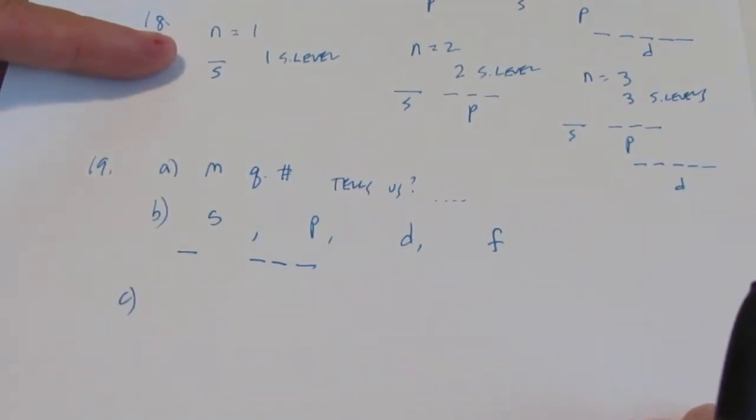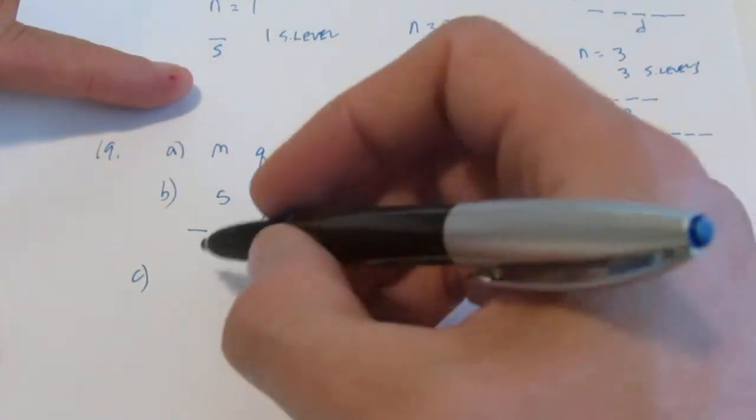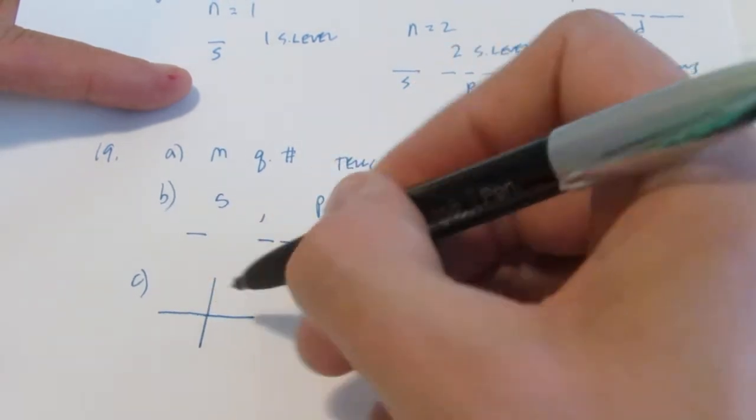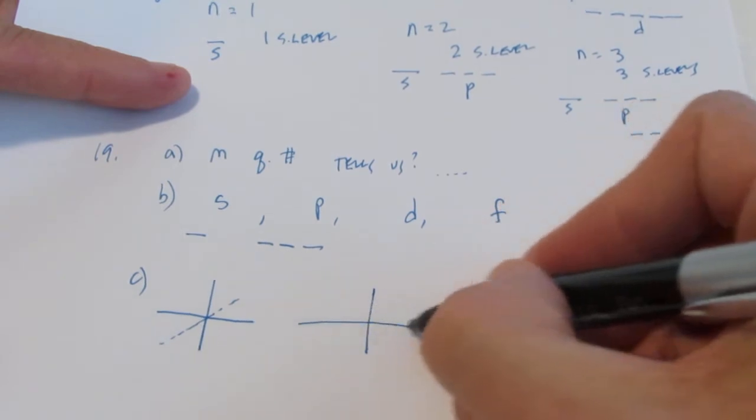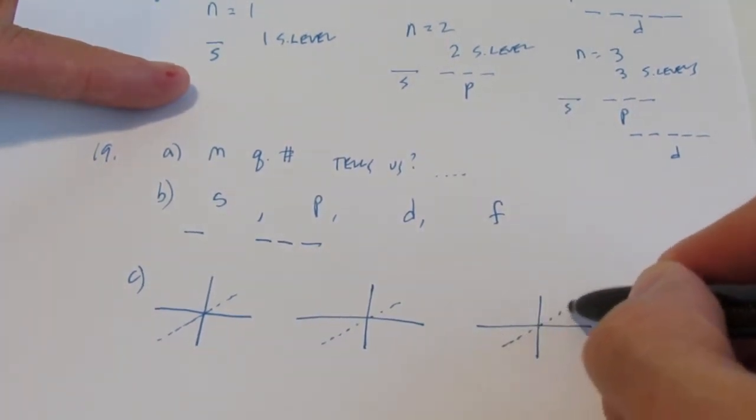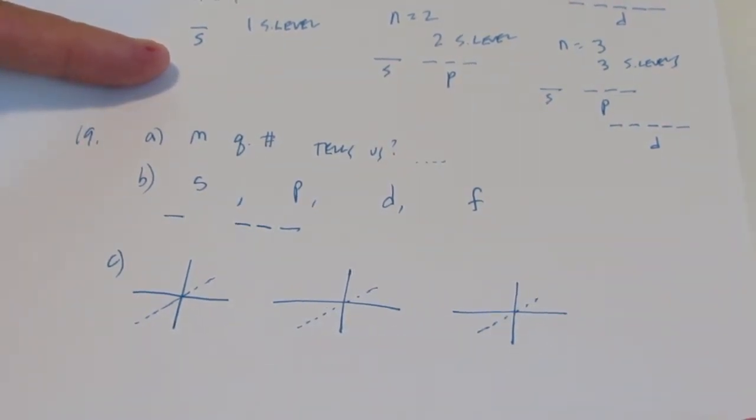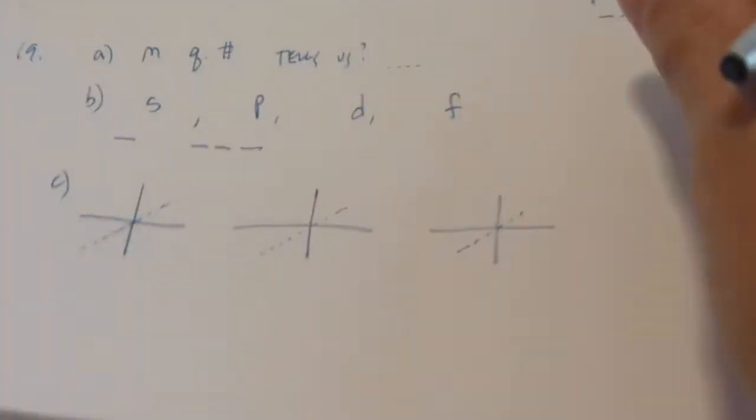Okay, letter C. Explain and illustrate the notation for distinguishing between the different P orbitals in a sublevel. So there are three P orbitals. There's negative one, zero, and positive one. But I want you to illustrate these. So I'm going to start you off by drawing three axes. And I'll let you finish that. It's your job to illustrate and explain the three orientations of a P sub-level. And that's nineteen letter C.